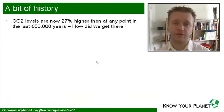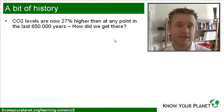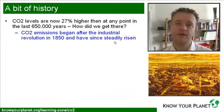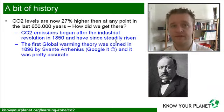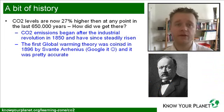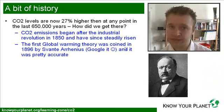Carbon dioxide levels are 27% higher right now than they've been for the last 650,000 years. The carbon dioxide emissions began after the Industrial Revolution in 1850 and they've steadily been rising. The first global warming theory was actually coined back in 1896 by Svante Arrhenius, a Swedish scientist, and it was pretty accurate.